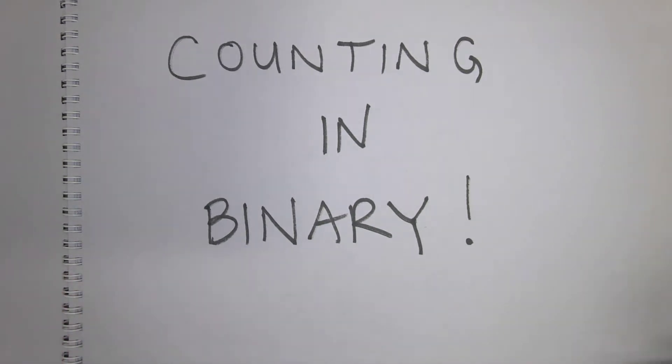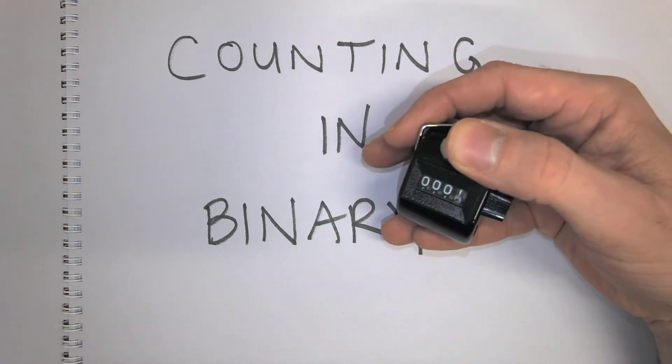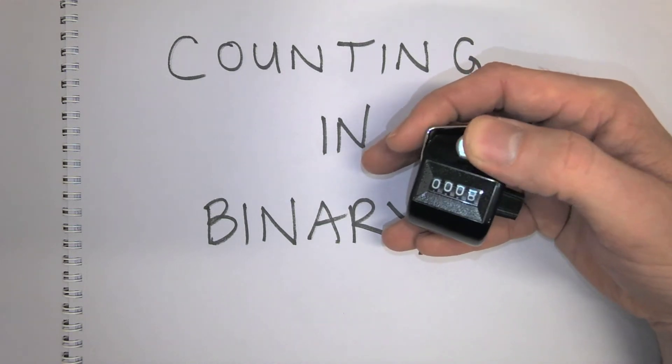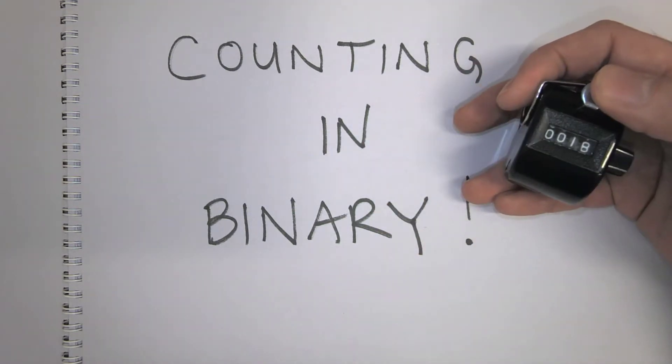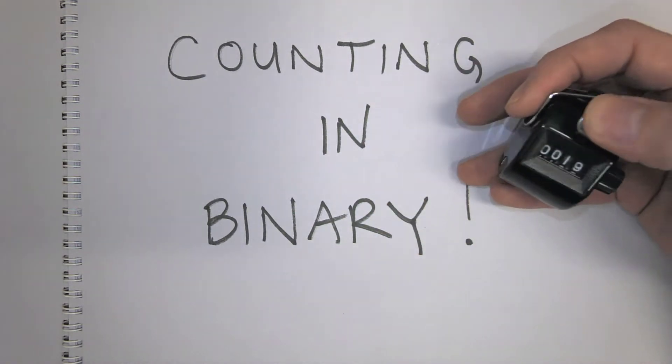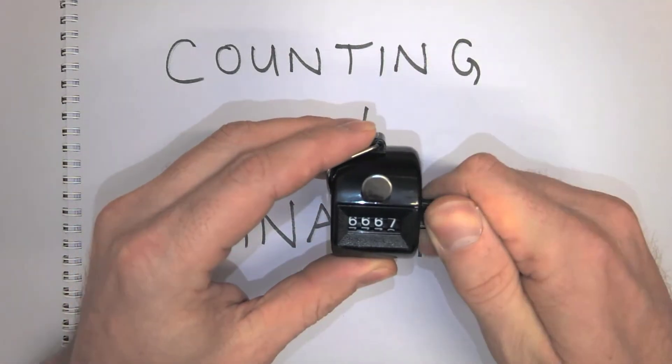And when I say counting in decimal, that's just regular counting that you're used to, you know, like start at 0, 1, 2, 3, 4, 5, 6, 7, 8, 9, like this. So this is the counting that you've been taught as a child and you use every day. And you get kind of used to doing it.